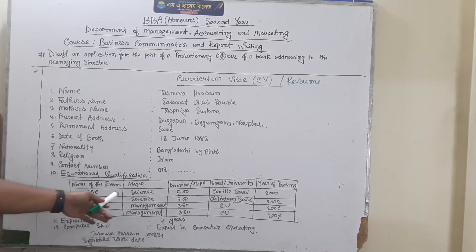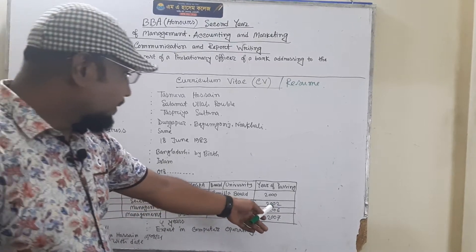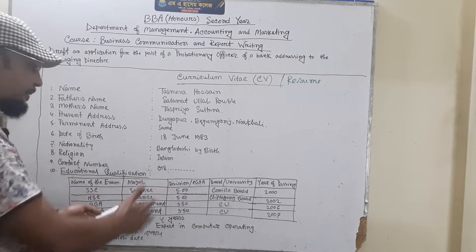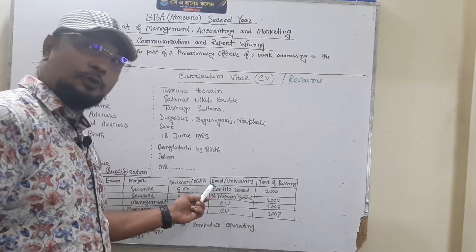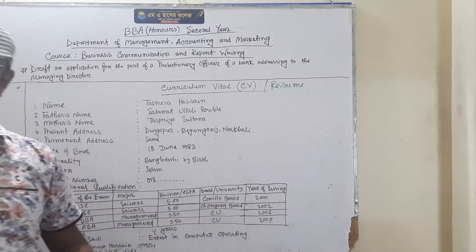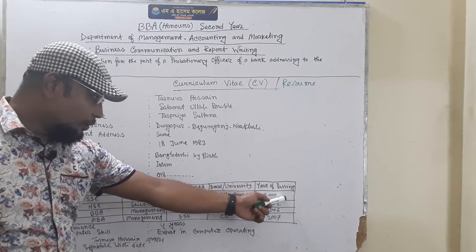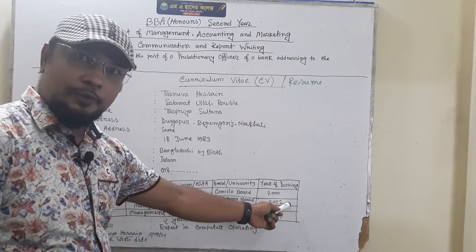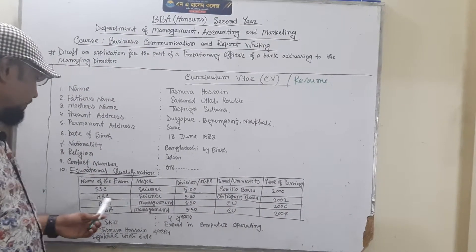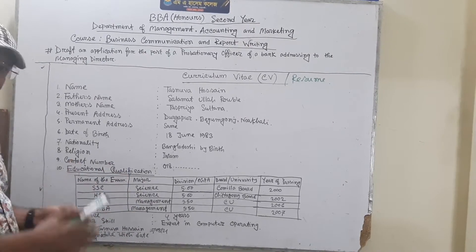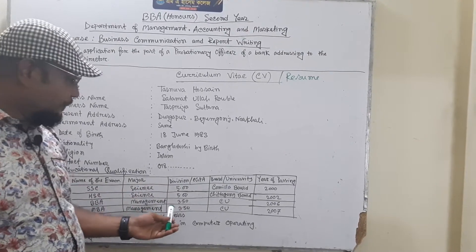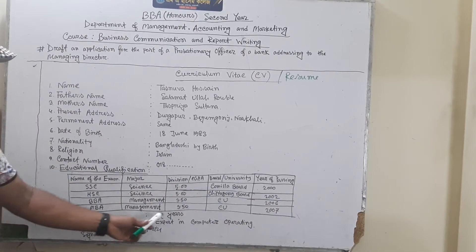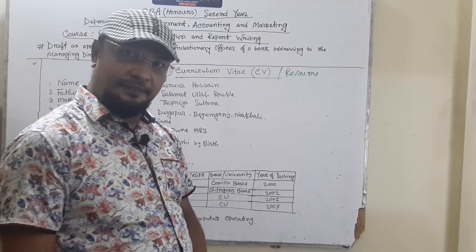After SSC, the next result is HSC — HSC Science, GPA 5, Chittagong Board, year 2002. Note: the spelling of Comilla was C-O-M-I-L-L-A at that time, but presently it is C-U-M-I-L-L-A. Next: BBA, major Management, CGPA 3.50 out of 4, Chittagong University, 2006 — this is a four-year course. Then MBA, Management, CGPA 2.50, Chittagong University, 2007 — MBA is a one-year course.